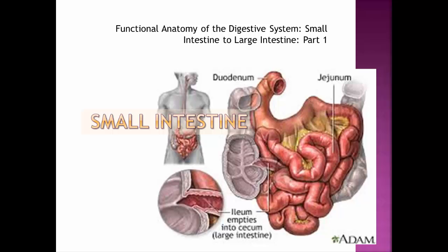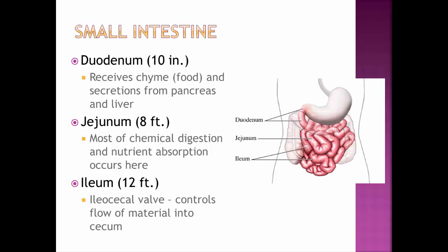Starting at the small intestine, it is divided into three parts. The first part connected to the stomach is called the duodenum, which is only about 10 inches long. It receives the food — now called chyme — from the stomach, and also receives secretions from the pancreas and the liver or gallbladder.